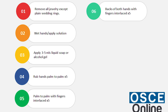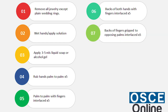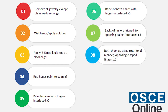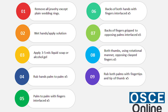Back of fingers gripped to two opposing palms interlaced five times. Both thumbs using a rotational manner with opposing clasped fingers five times. Rub both palms with fingertips and tip of thumb five times, then wrists clasped in both hands.